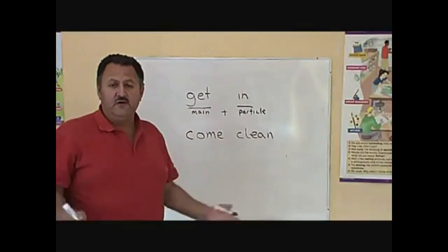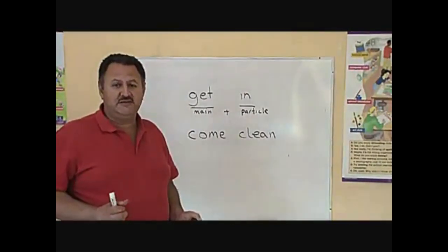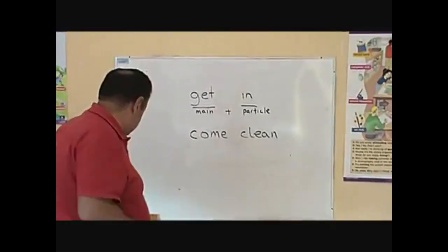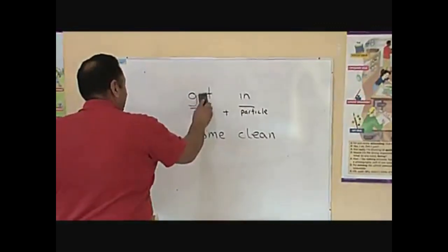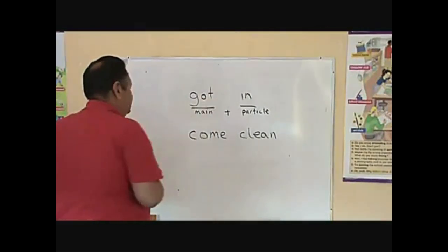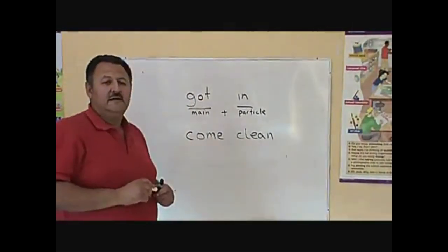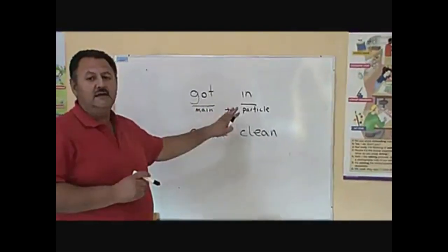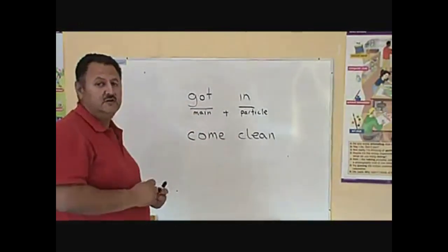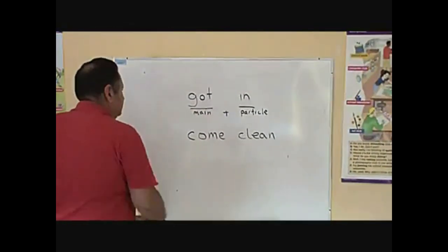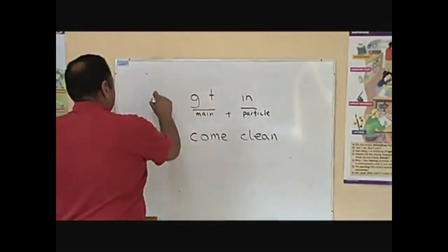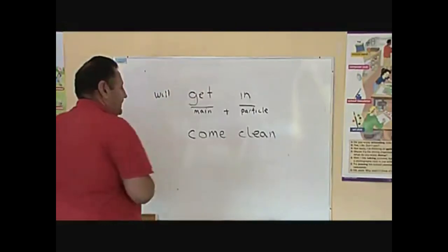The main verb is the one that changes when the time tense changes. For example, in the past tense, get turns into got. To get in. In the past, got in. In the future, we would change it to will get in.